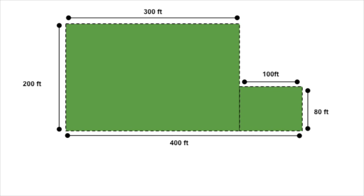This may seem complicated, but it's really as simple as splitting the two areas into two separate rectangles, calculating the area of each of those rectangles, and then adding those two areas together. So go ahead and draw a dotted line down between these two. Now is a good time to hit pause on the video — go ahead, hit pause, then calculate the areas of those two sections, add them together, and hit play again and we'll see how you did.